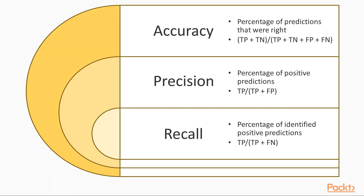However, there are some pretty standard ways of aggregating and measuring these scenarios that result in the following common metrics. Accuracy: the percentage of predictions that were right. Precision: the percentage of positive predictions that were actually positive. Recall: the percentage of positive observations that were identified as positive.